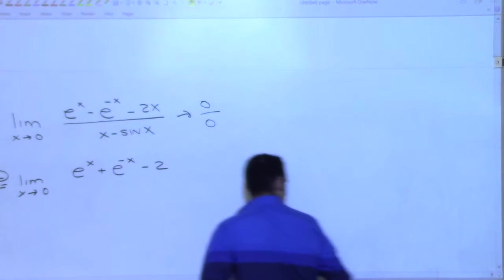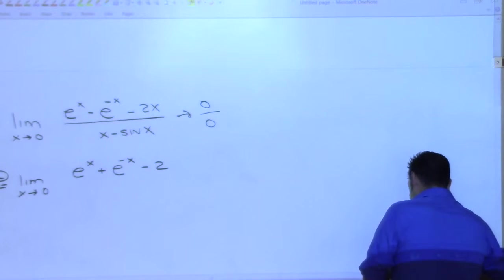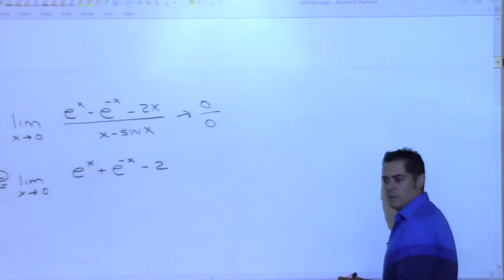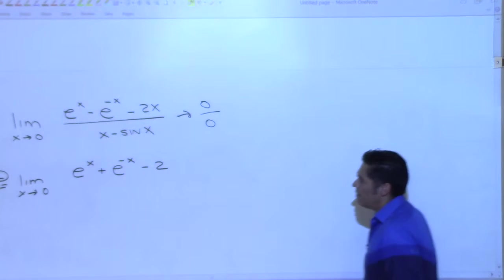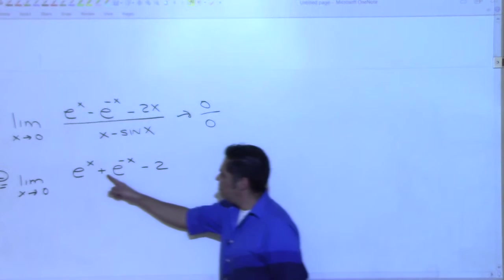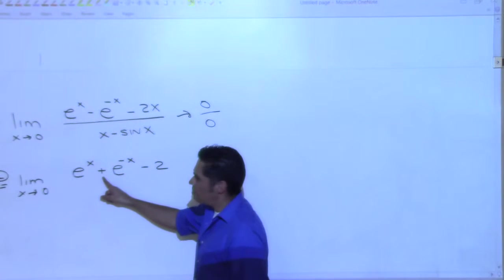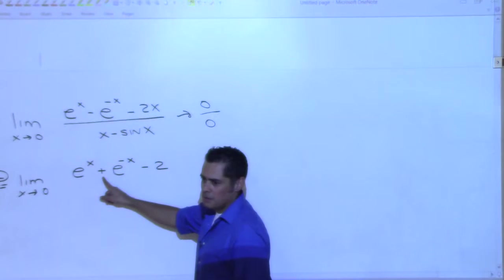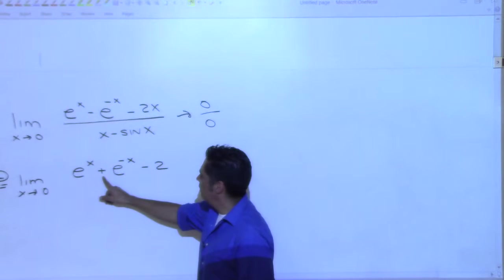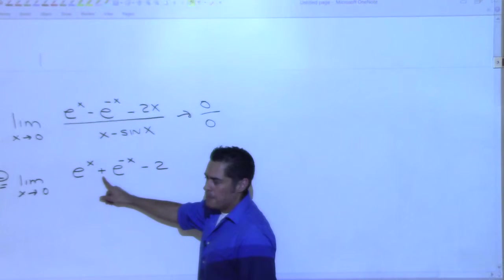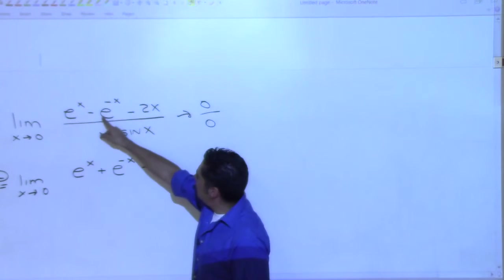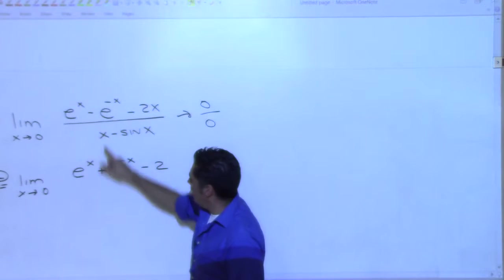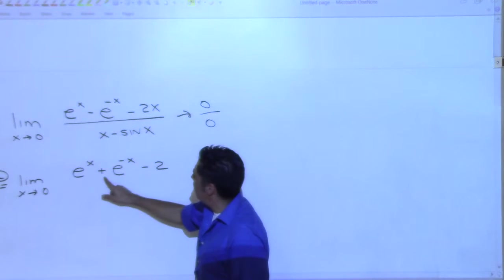Emmanuel, why did he put plus here? Is Nas wrong? Why is there a plus here? He took the derivative of this with the negative in front and changed that to a plus. Why did he do that?